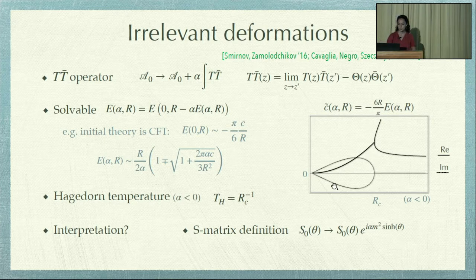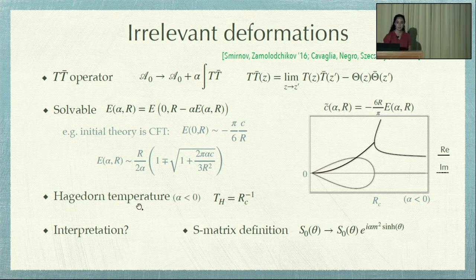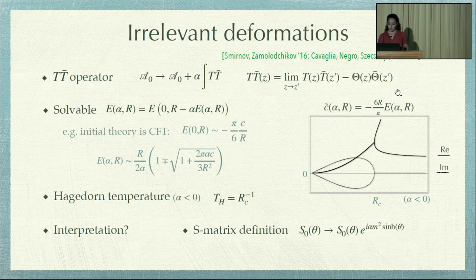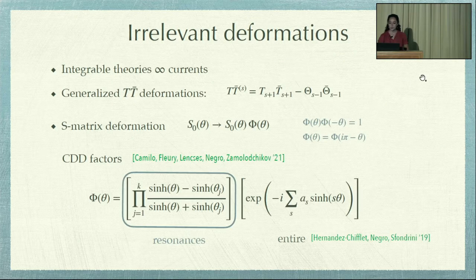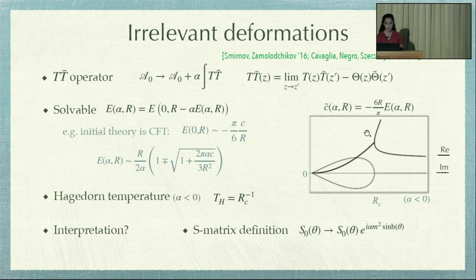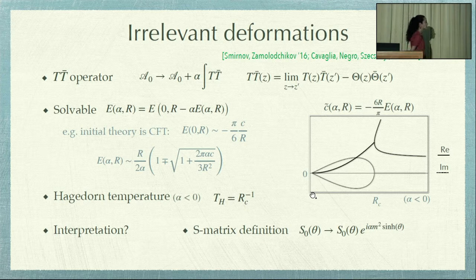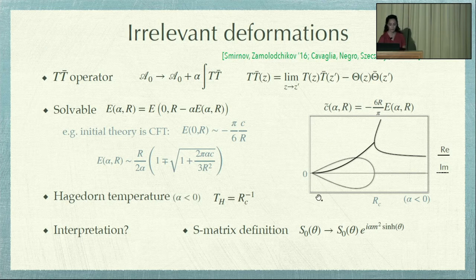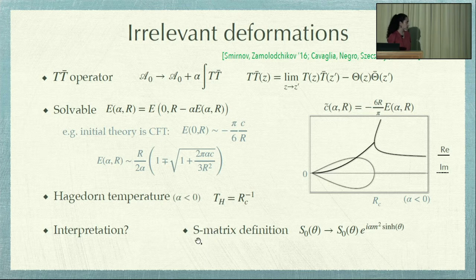This critical radius gives us some Hagedorn temperature, since computing the entropy you would get a density of states that grows exponentially with energy — so this is a Hagedorn transition. However, the physics of the second branch and these complex values is not understood. It's still an open problem to give a physical interpretation to this second branch of solutions or the complex values here. Finally, you can also define this deformation through its effect on the S-matrix: if we have some 2-to-2 S-matrix S0, the effect of this TT-bar deformation is simply dressing it with some phase.